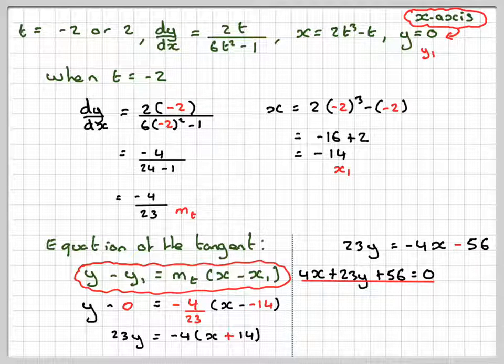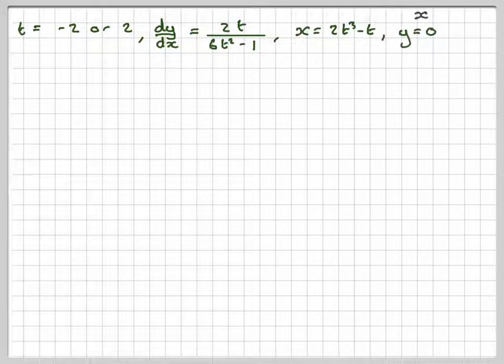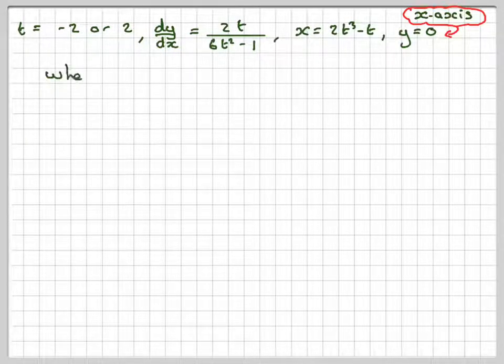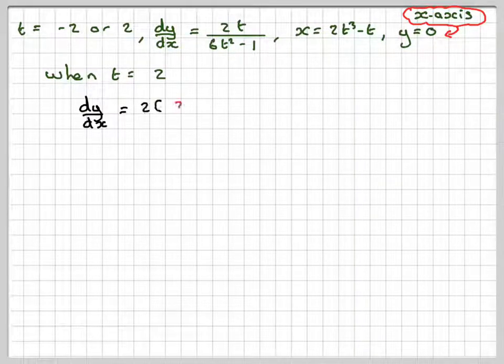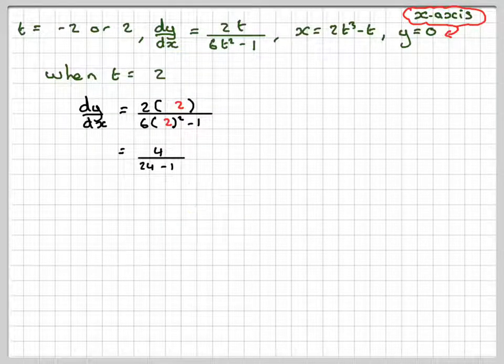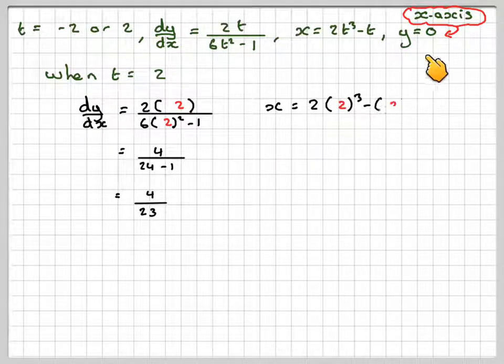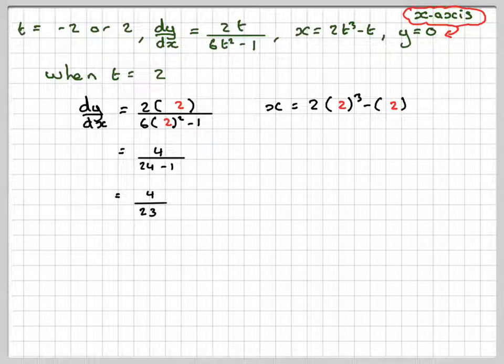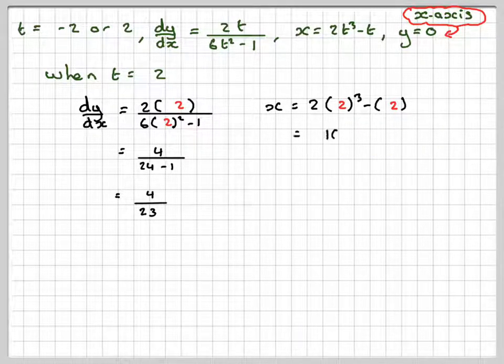Now I have to repeat the process for when t equals 2. When t equals 2, dy by dx is going to be 2 times 2 divided by 6 times 2 squared minus 1. That gives me 4 over 24 minus 1, which is 4 over 23. My x-coordinate when y is 0 and t equals 2 is 2 times 2 cubed minus 2. 2 cubed is 8 times 2 is 16 minus 2, which is 14.